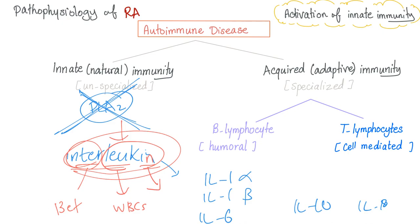Second, glucocorticoids suppress immunity — they're immunosuppressants — by inhibiting genes that code for cytokines such as interleukin-1 and interleukin-2, especially interleukin-1 beta. So steroids help patients with rheumatoid arthritis because they are anti-inflammatory and anti-interleukin.